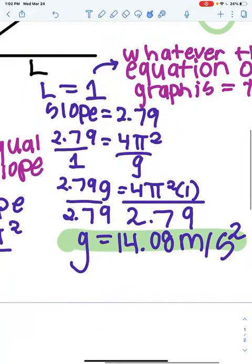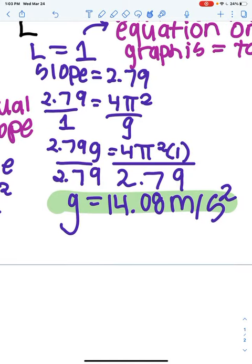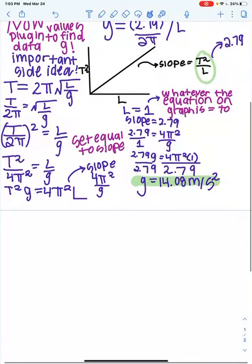And then we plug in our values. So we have our slope, which is 2.79. We divide it by 1, which is just our length. And then we get 4π squared over g. And then we just divide by 2.79 on both sides, and we get g is equal to 14.08 meters per second squared.